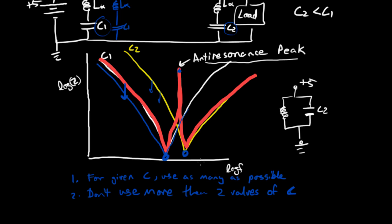But you don't want to include a C3, a C4 because you're going to have more spikes, more anti-resonance peaks, and you're playing with fire. One of those could land on a frequency that you need to use in your circuit, and then you've made the problem a lot worse by including multiple values of capacitors.